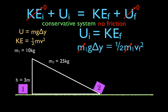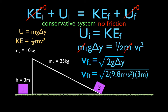Solving for the final velocity: we have g·Δh = ½v_final². Multiply both sides by 2 to eliminate the one-half, then take the square root of both sides. The final velocity of object one equals the square root of 2 times g times the change in height — there's no mass term. Plugging in values: √(2 × 9.8 × 3) gives a final velocity of 7.7 meters per second.